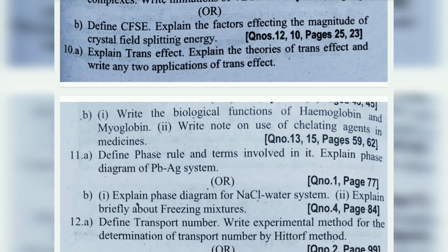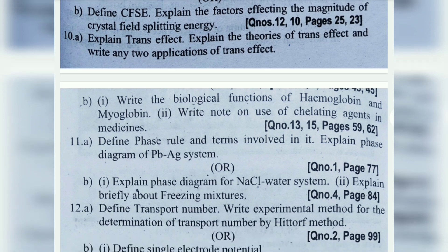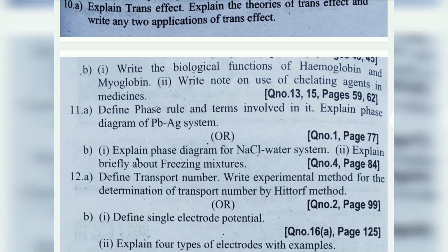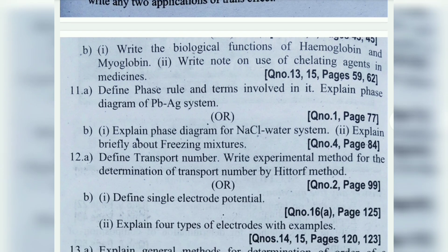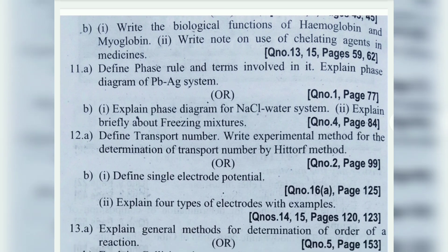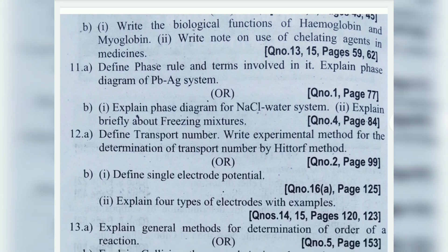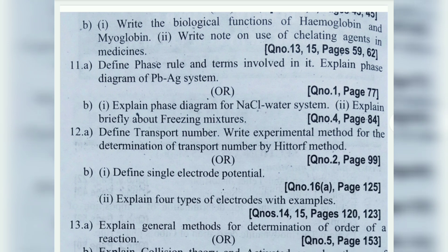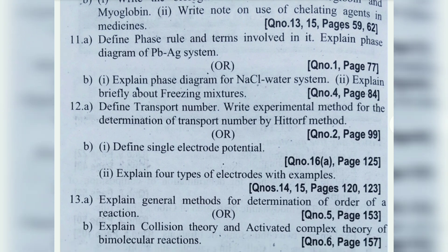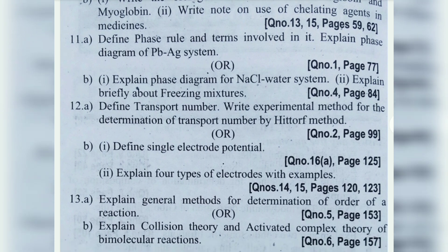11th (b): Explain phase diagram for NaCl-water system and explain briefly about freezing mixtures. 12th (a): Transport number. 12th (b): Define single electrode potential and four types of electrodes with examples — make sure to include examples, don't skip them, or you'll lose 2 marks.